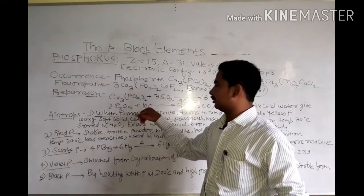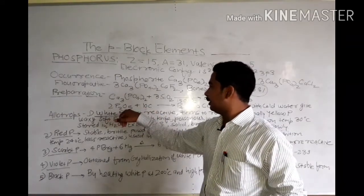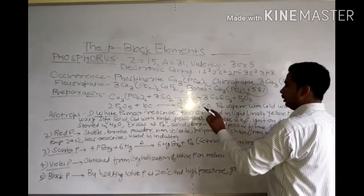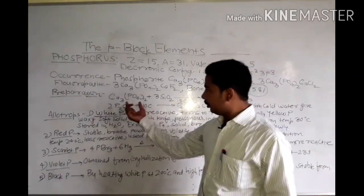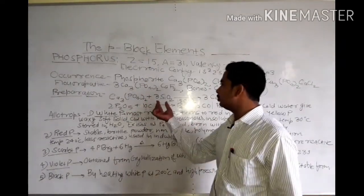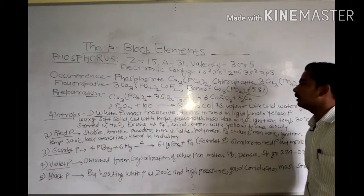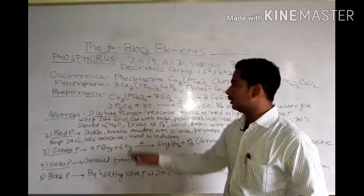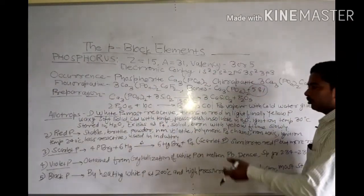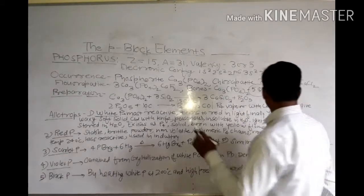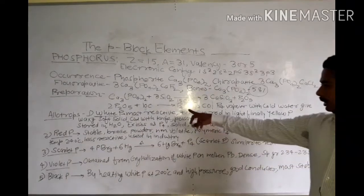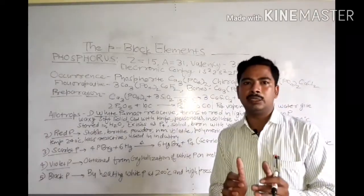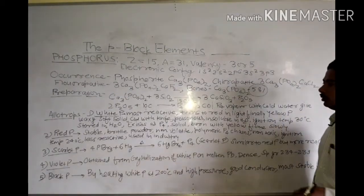In preparation, when we have bone ash and coke — 10C — and add phosphorus pentoxide, which is reacted with silicon, this produces calcium silicate and phosphorus pentoxide. Then phosphorus pentoxide is reduced by carbon, producing phosphorus vapor and carbon monoxide gas. This gives white phosphorus. The phosphorus vapor produced is condensed with cold water to give solid white phosphorus.